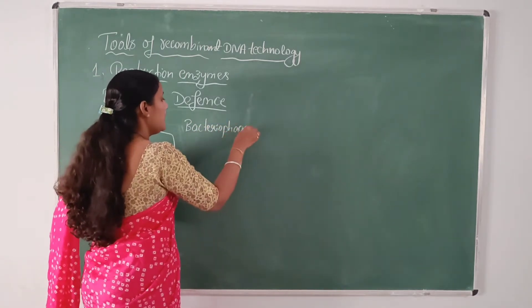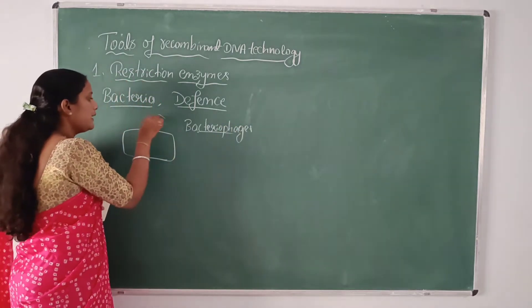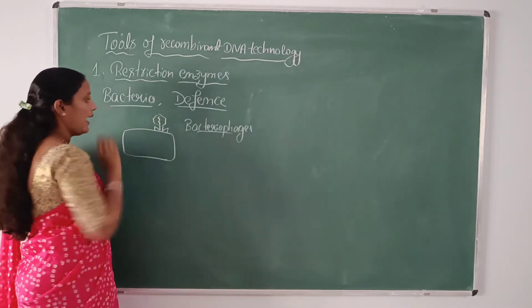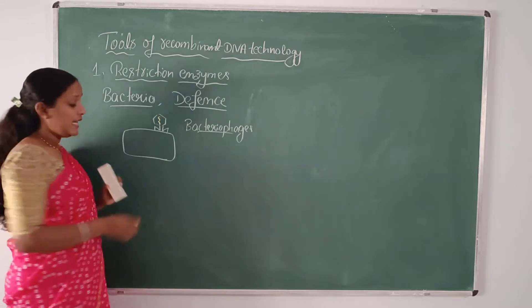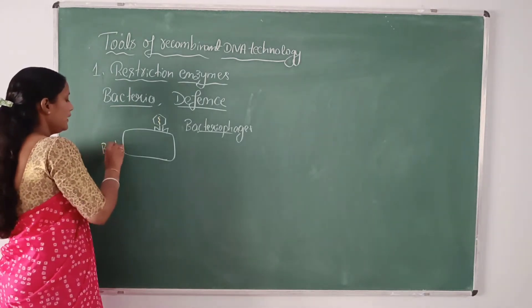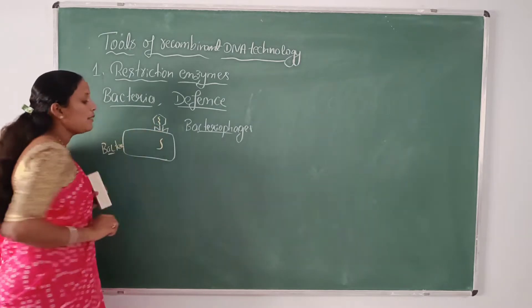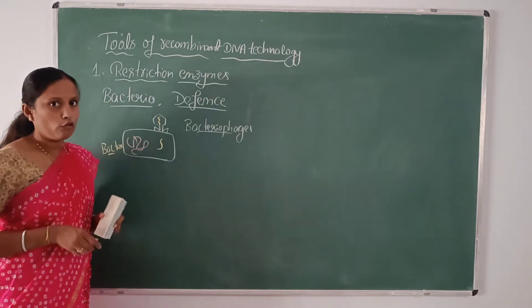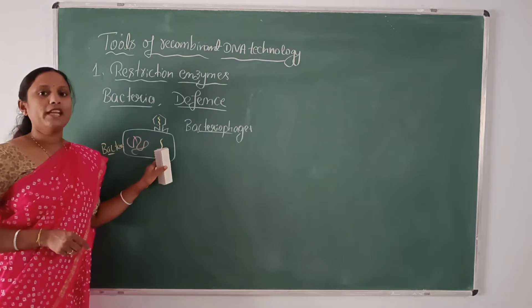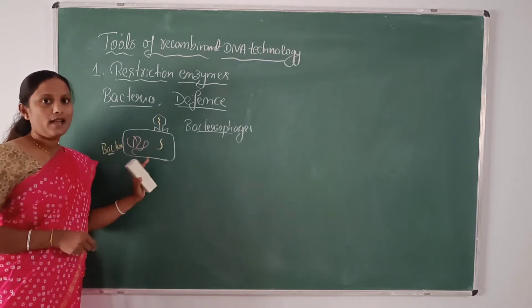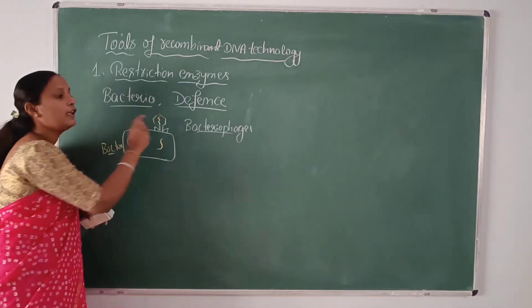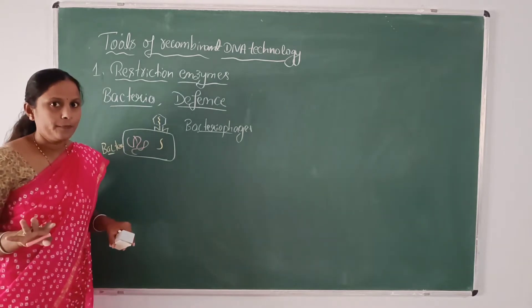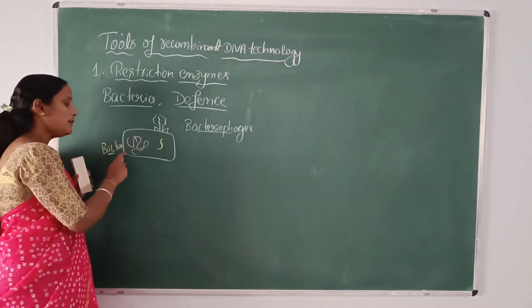Bacteriophages are viruses which can infect bacteria. This bacteriophage has DNA, and whenever it infects bacteria, it sends its DNA into the bacterial cell. The bacteria also have their own DNA or chromosome. If the bacteriophage DNA enters the bacteria, it will start producing more bacteriophages. Finally, the bacteria will get lysed and die. To prevent this, bacteria produce enzymes.